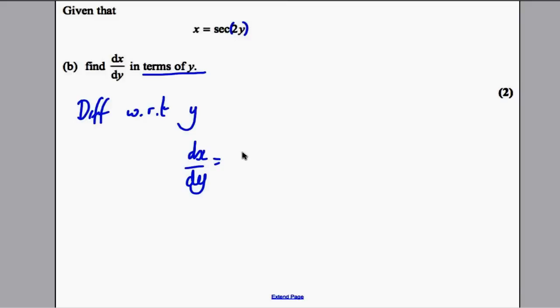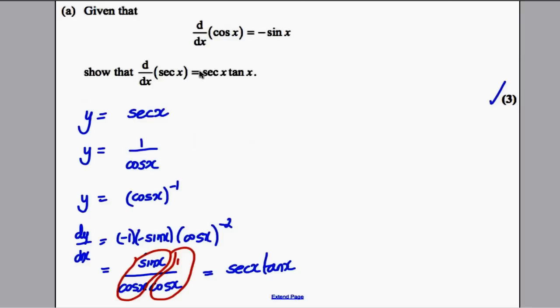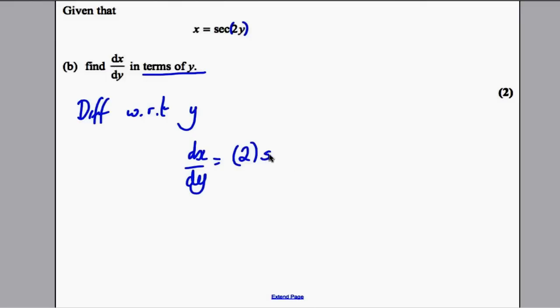We differentiate the bracket and we get 2. We differentiate sec and we've just realized from the previous part that we get sec tan. So we get sec of 2y, tan of 2y.